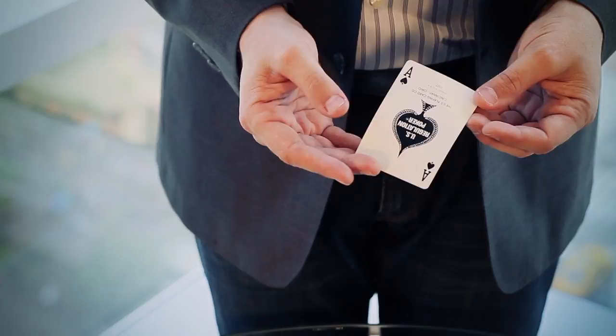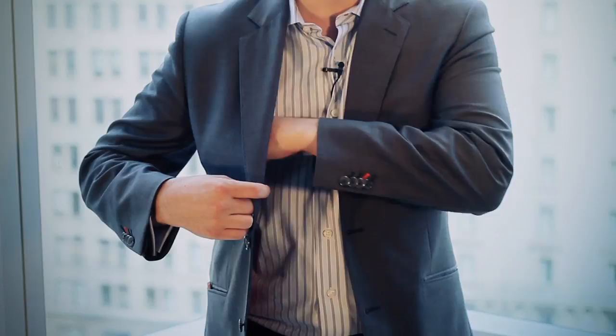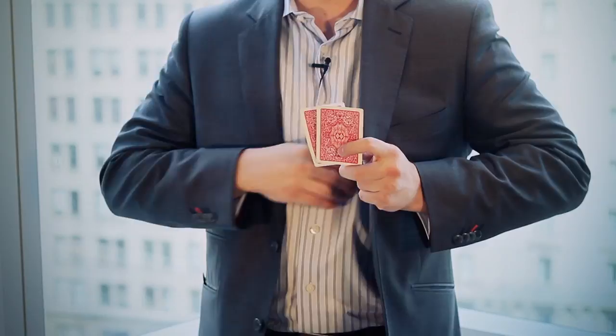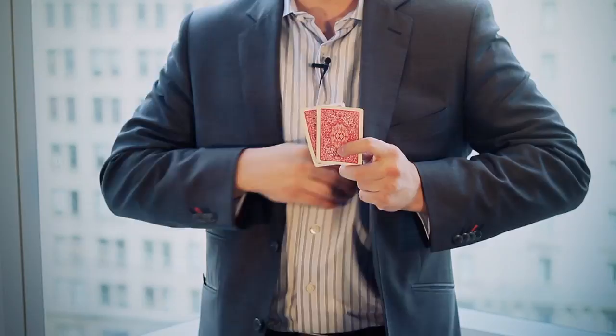But if those are the four aces, where do you suppose the jacks went? Of course, that means one of them has to be right here, one right here, one in this pocket, and that is all four jacks.